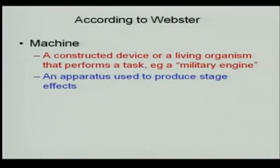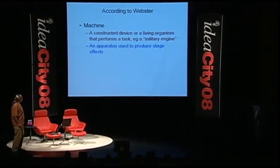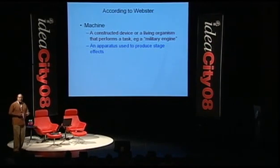The first thing I want to tell you about is what is a learning machine. So I looked at Webster — I figured that's a good place to start. A machine is a constructed device or a living organism that performs a task. A second definition, which I think is quite interesting, is an apparatus used to produce stage effects — connoting some sort of magic or mystery, producing a show for the audience.